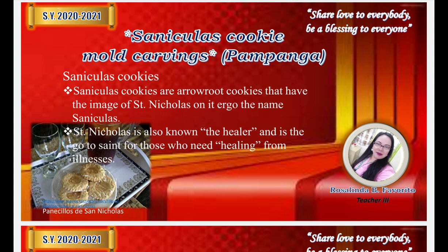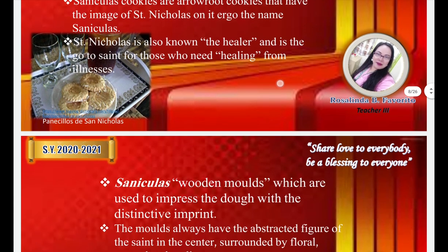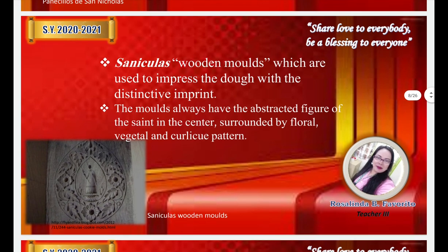These biscuits have the characteristic image of San Nicolas — also called Apong Kolas — embossed on the flat surface. The biscuit is usually blessed by the friars, and some believe it is an effective treatment for pain as well as pampaswerte or lucky charm. The San Nicolas wooden molds, which are used to impress the dough with a distinctive imprint, always have the abstracted figure of the saint in the center, surrounded by floral, vegetal, and curlicue patterns, as you can see in the picture.